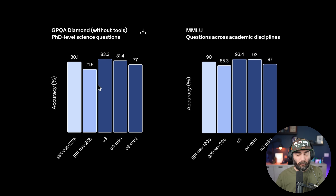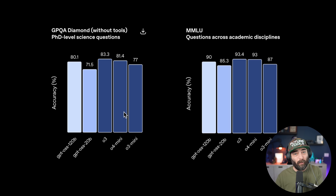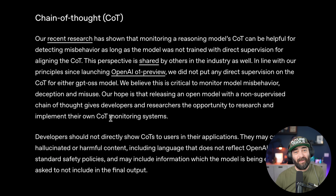In the GPQA — which is Google-proof, meaning stuff you can't really just find the answer to on Google — the 120 billion parameter model outperformed O3 and performs pretty on par with O3 and O4-mini. And again, it's an open weight model, free to use, downloadable on your computer, and it's pretty close to matching the current state-of-the-art closed models from OpenAI. It's pretty mind-blowing honestly. These are also chain-of-thought models.